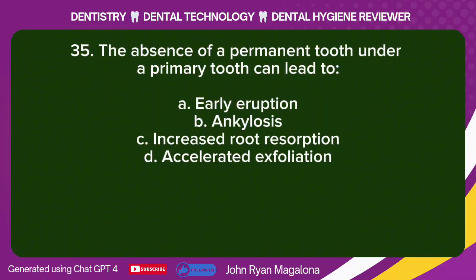Question 35: The absence of a permanent tooth under a primary tooth can lead to: A. Early eruption. B. Ankylosis. C. Increased root resorption. D. Accelerated exfoliation. Answer: B. Ankylosis.